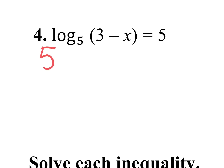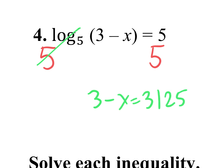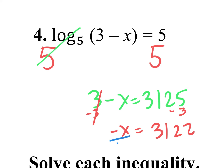You're going to put a base 5 on both sides so it eliminates. Siri says 5 raised to the 5th power is 3,125. So we have 3 minus x equals 3,125. Then we subtract 3 from both sides, giving us negative x equals 3,122. We divide by negative 1, and the final answer is x equals negative 3,122.